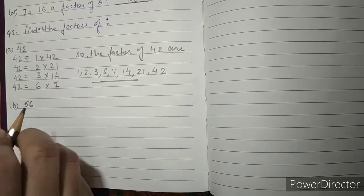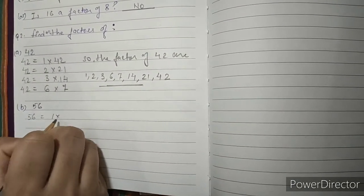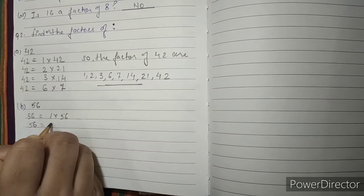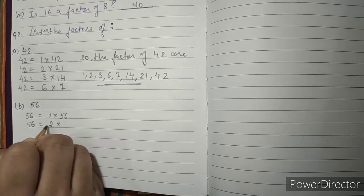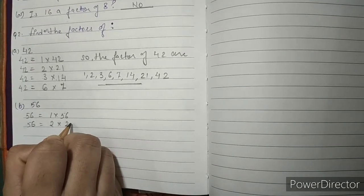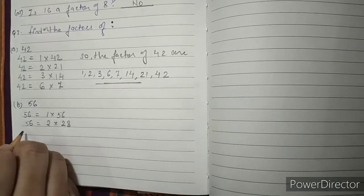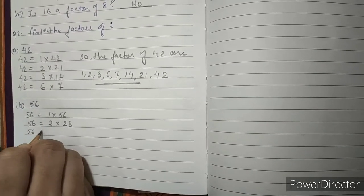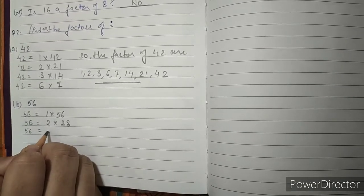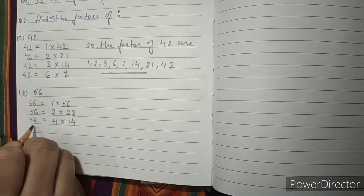B: 56. First, 56 is divisible by 1. Next, 56 is divisible by 2: 2 multiply by 28 gives 56. 56 is not divisible by 3. So we take 4: 4 multiply by 14 gives 56.